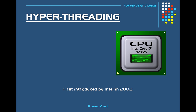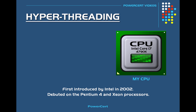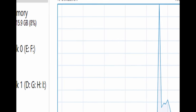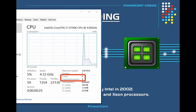Hyper-threading was first introduced by Intel back in 2002, debuting on the Intel Pentium 4 and Xeon processors, and is still used today. I'm currently using an Intel i7 quad core CPU on my personal computer, which also has hyper-threading. If I open up my task manager, my operating system recognizes that I have four physical cores and eight logical or virtual cores.